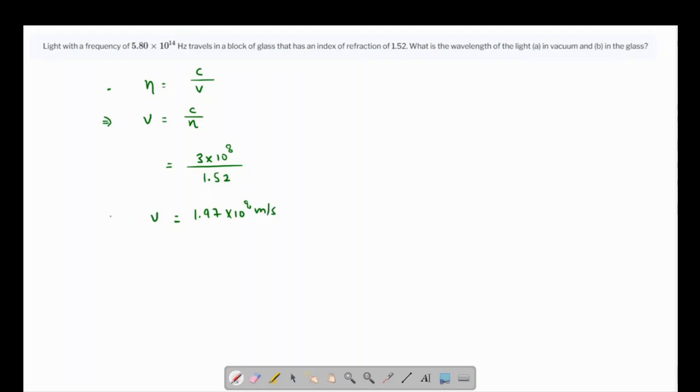So this is the required speed in that particular medium. For part a, we can find the wavelength which is given by the speed in vacuum over the frequency.